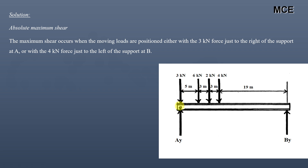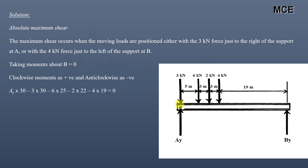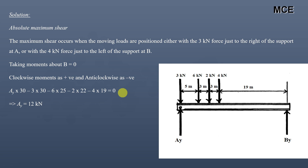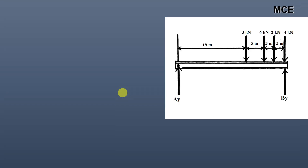For the first case, we assume the 3 kN load is just to the right of support A and find the vertical reaction at A. Taking moments about B equals zero, with clockwise moments positive: Ay × 30 − 3 × 30 − 6 × 25 − 4 × 19 = 0. The moment due to the support reaction is clockwise and moments due to all loads are anti-clockwise. From this we get the vertical reaction at A equal to 12 kN.